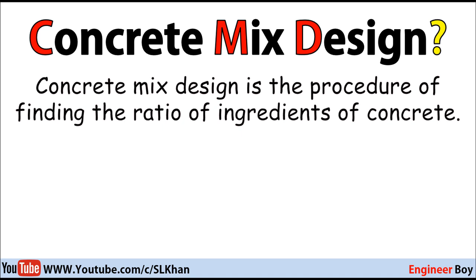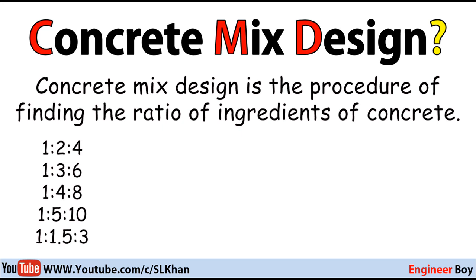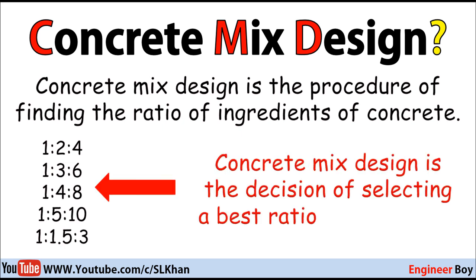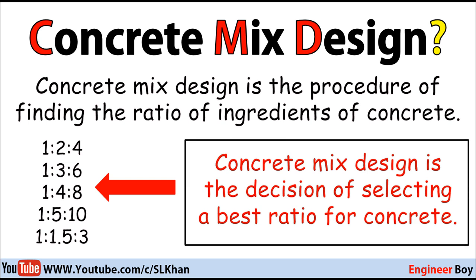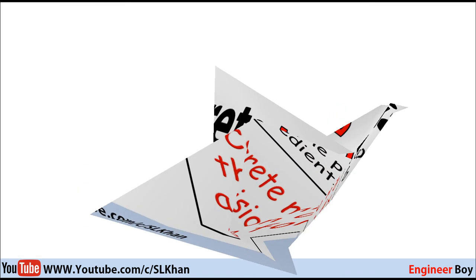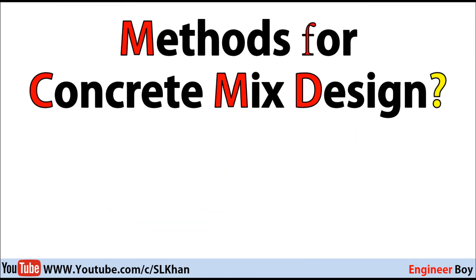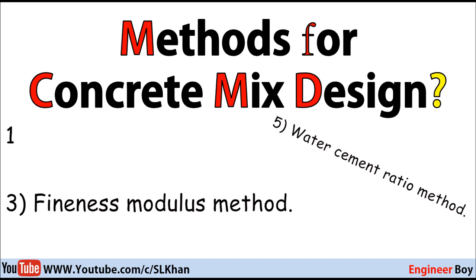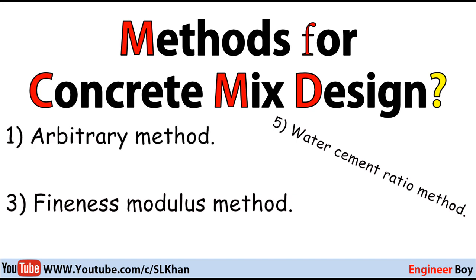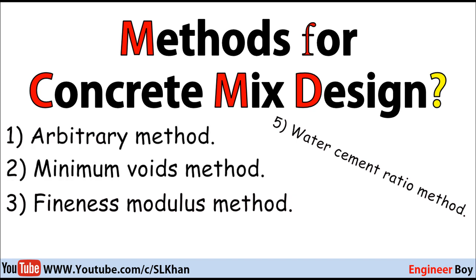Like you may have seen or heard different ratios for concrete on site, like 1:2:4, 1:3:6, 1:5:10, etc. So concrete mix design is the decision of selecting the best ratio for concrete, and there are many methods to decide the best ratio, like the water-cement ratio method, the fineness modulus method, the arbitrary method, minimum voids method,